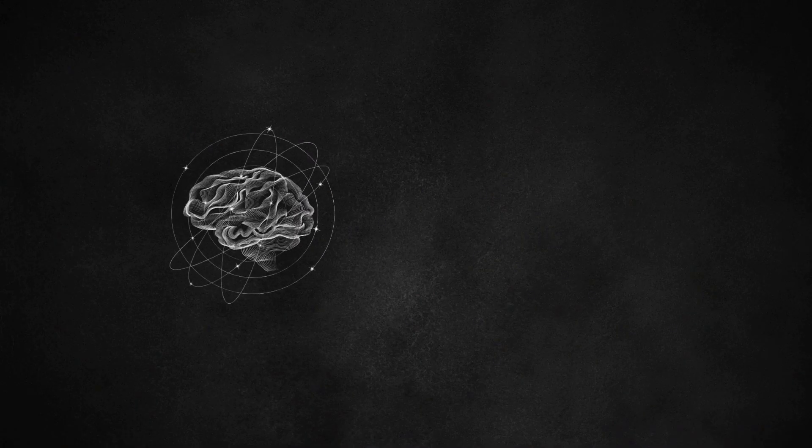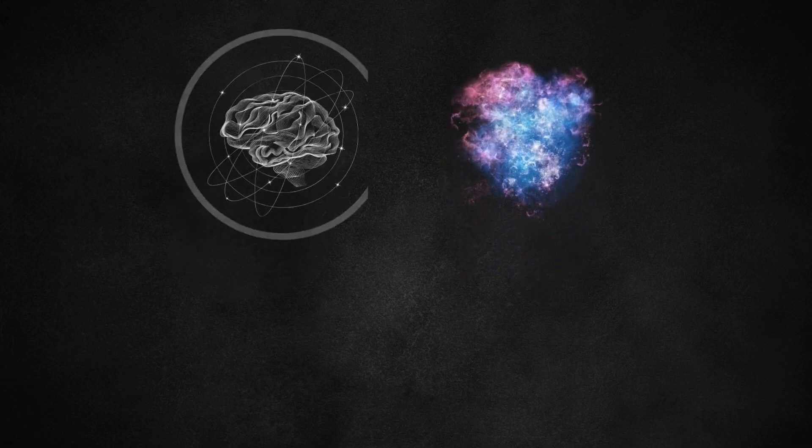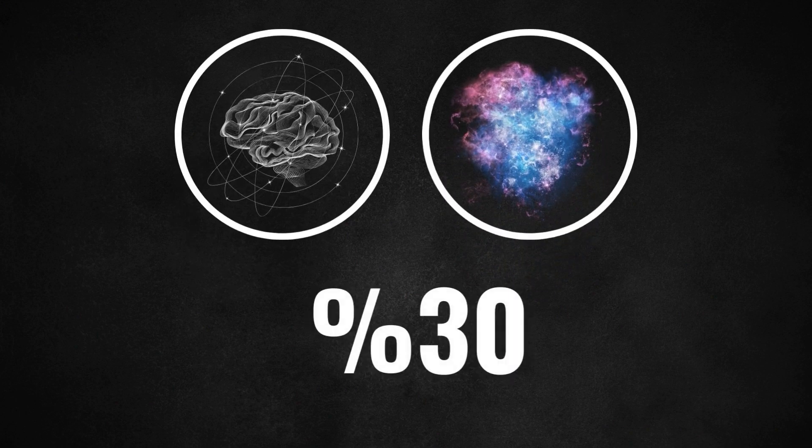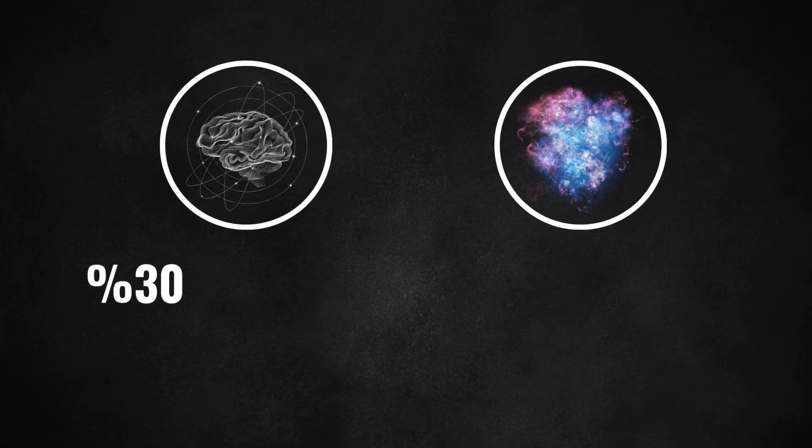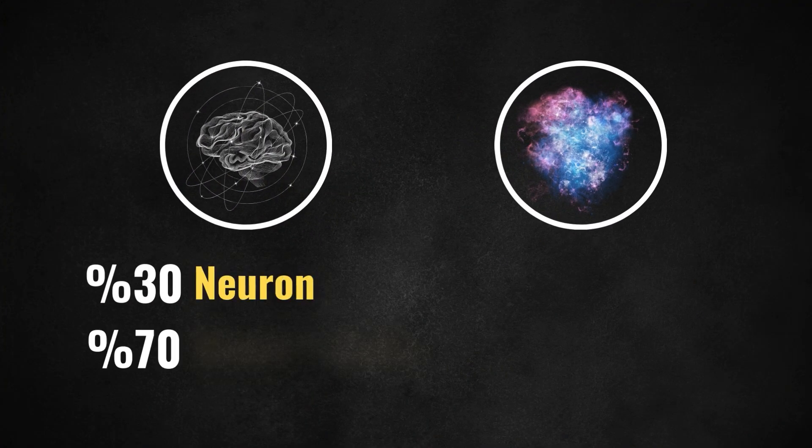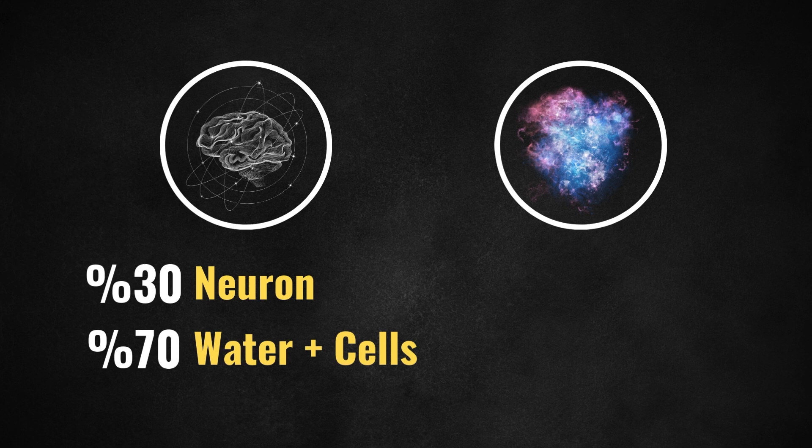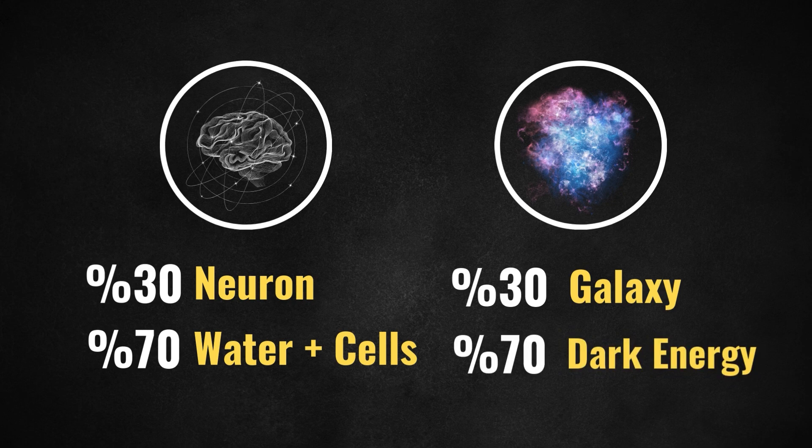In both the brain and cosmic web, only 30% of the mass is made up of active components. So what does this mean? Only 30% of the mass of our brain consists of neurons. The rest is made up of water and some supporting cells. In the cosmic web, 30% consists of galaxies. In the rest, instead of water, there's dark energy. Look, even while I'm talking about it, my hair is standing on end. It's not over, I'm continuing.